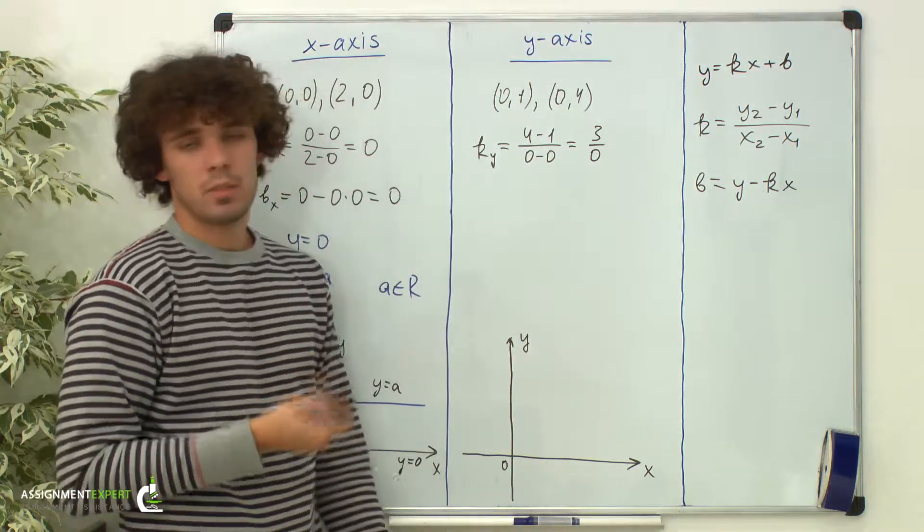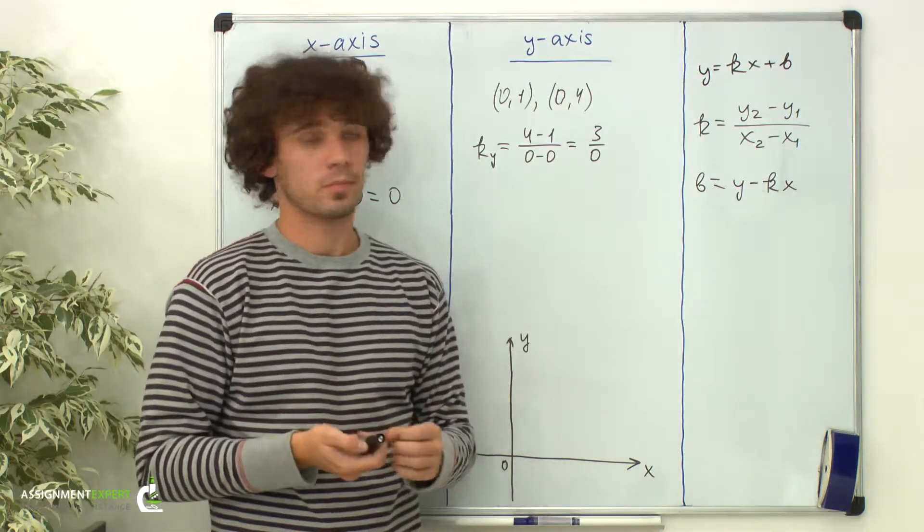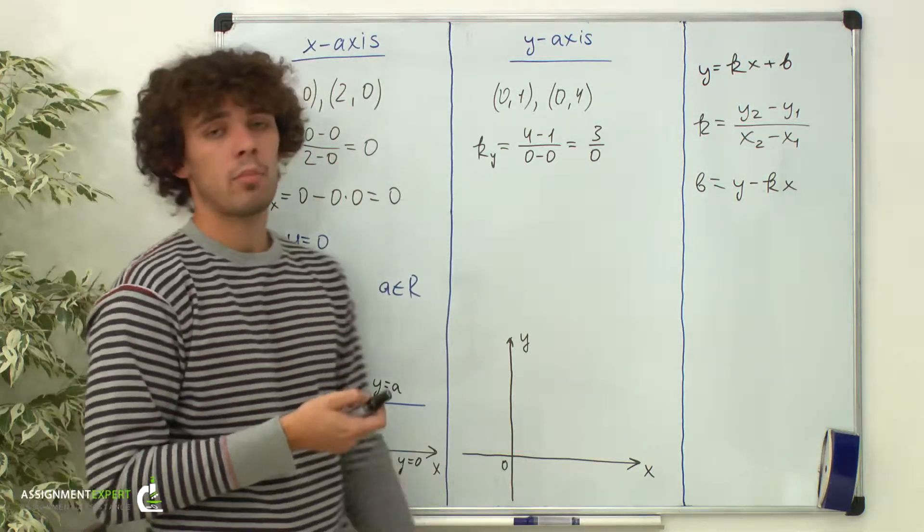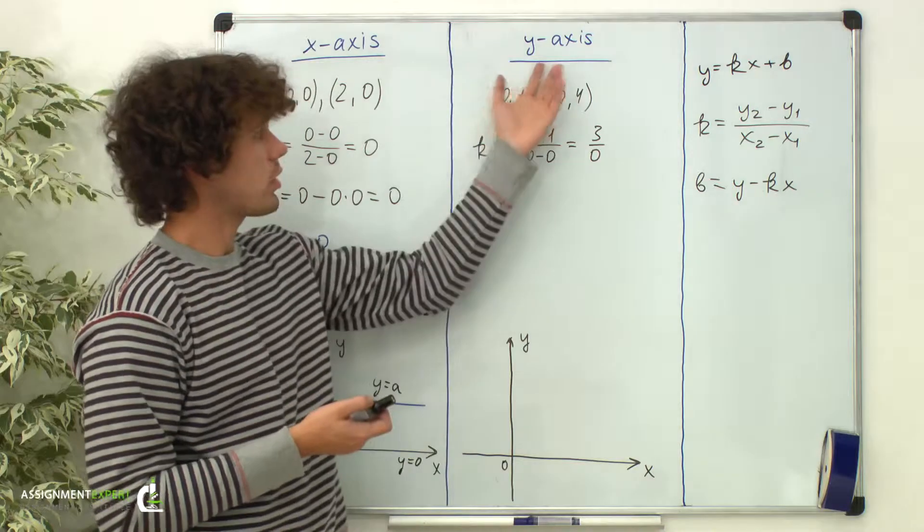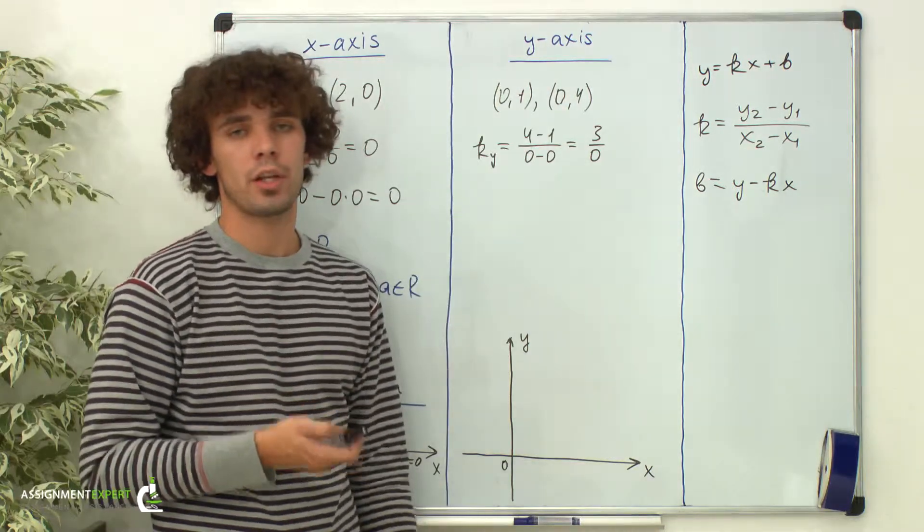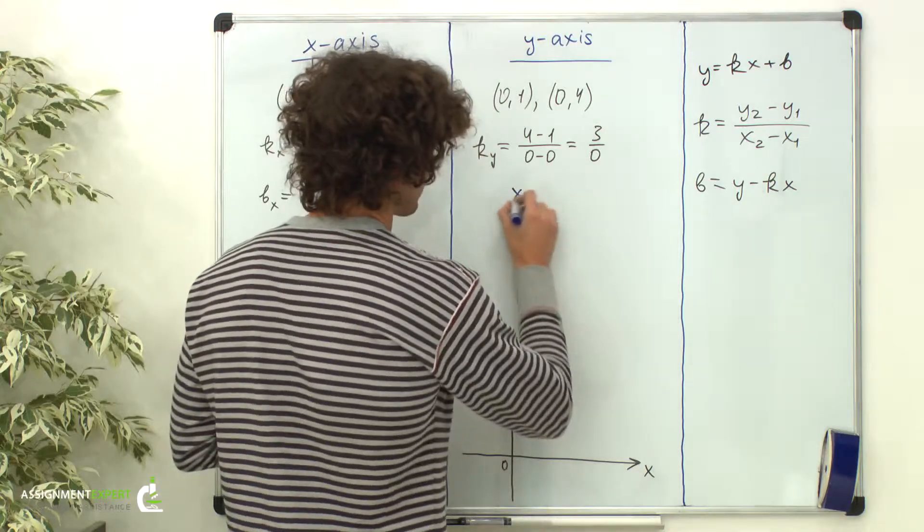Vertical line is a special case because its equation cannot be written in the slope-intercept form. Luckily, we are still able to write the equation for that line. As we know, any point on the y-axis has x-coordinate 0. So, the equation for that line is x equals 0.